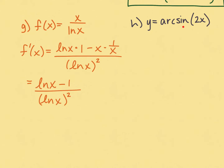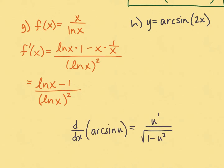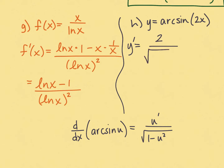In part h we have an arc sine rule. The derivative of the arc sine of u is u prime over the square root of 1 minus u squared — this builds the chain rule in. Our u value is 2x, so u prime is 2. When squaring 2x we get 4x squared, not 2x squared — that's a common error. So our derivative has u prime equal to 2 in the numerator, and the denominator is the square root of 1 minus 4x squared.